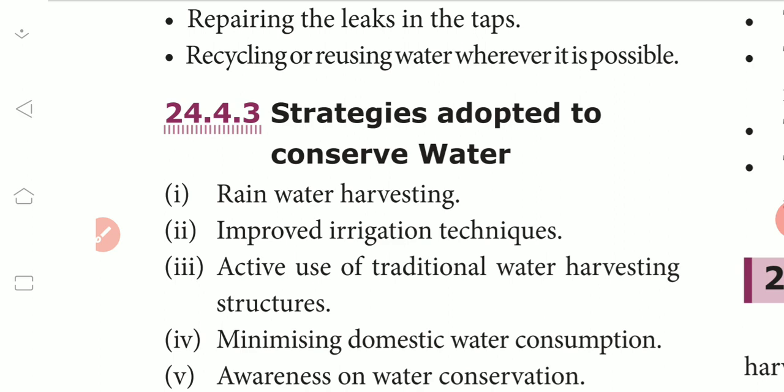We also use improved irrigation techniques such as drip irrigation and sprinkle irrigation, and actively use traditional water harvesting structures.